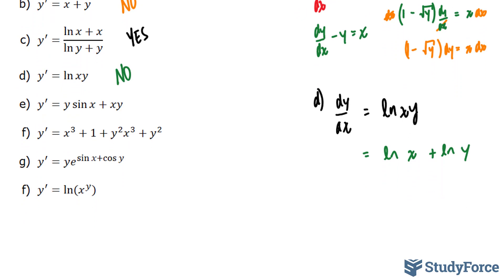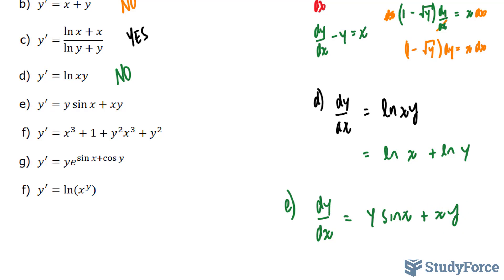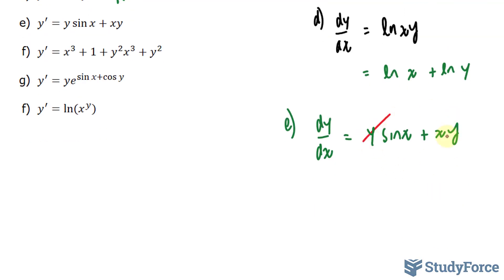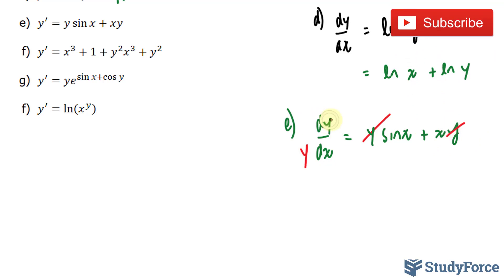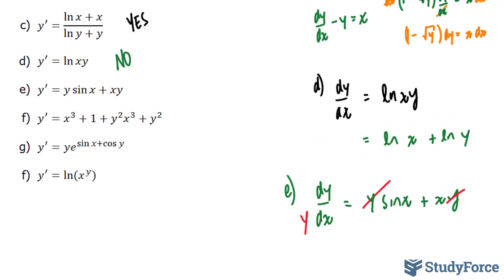In question (e), we have y prime is equal to y times sin x plus xy. Rewriting as dy over dx is equal to y sin x plus xy, if I divide both sides by y, the y's cancel and we're left with sin x plus x on the right side. On the left side we have dy over y times dx. Multiplying both sides by dx gives dx on the right side. Therefore, this one is separable.